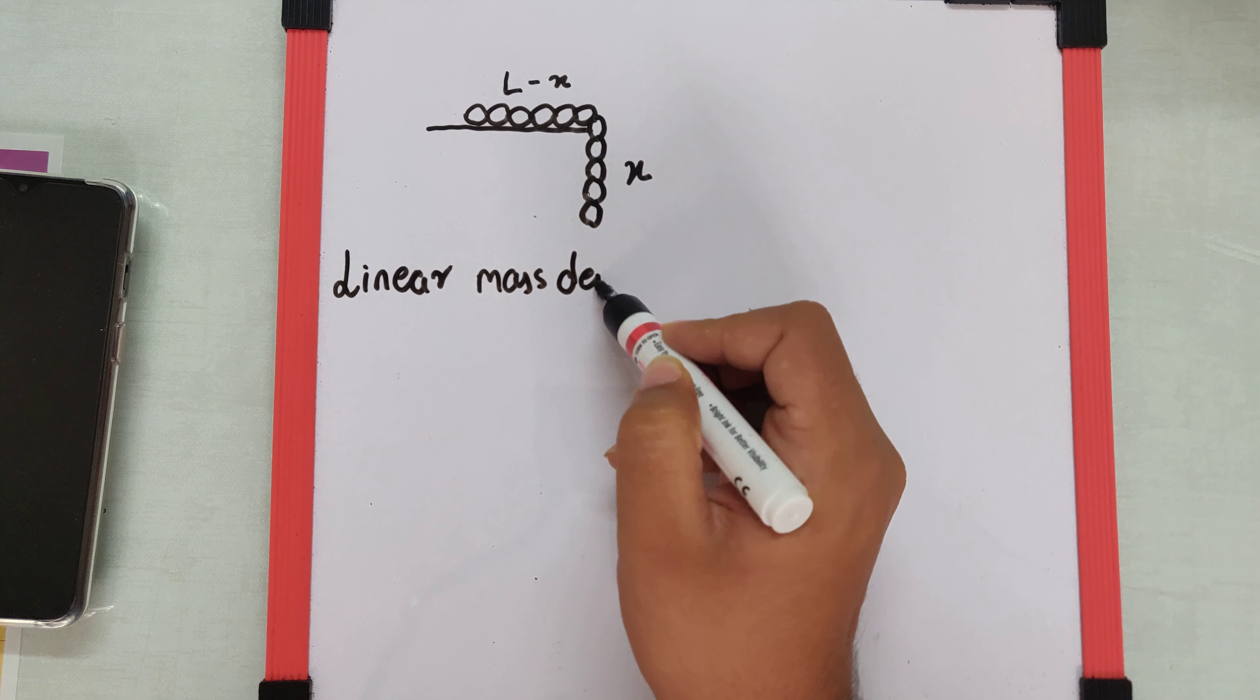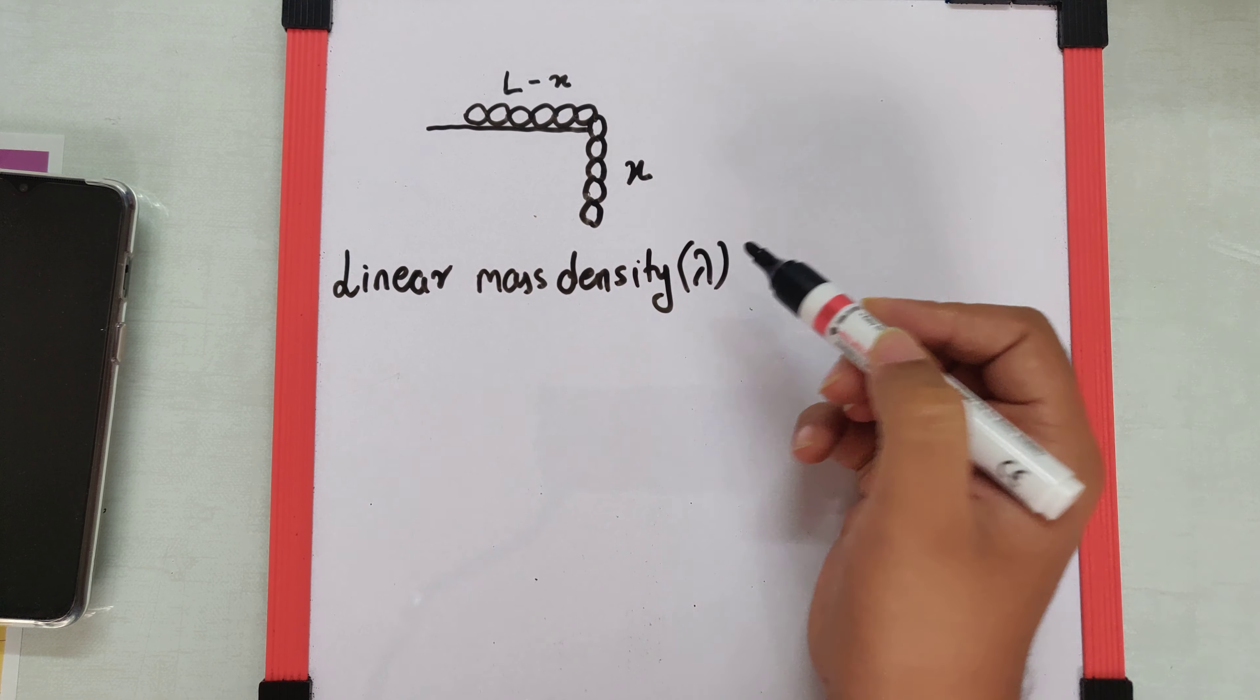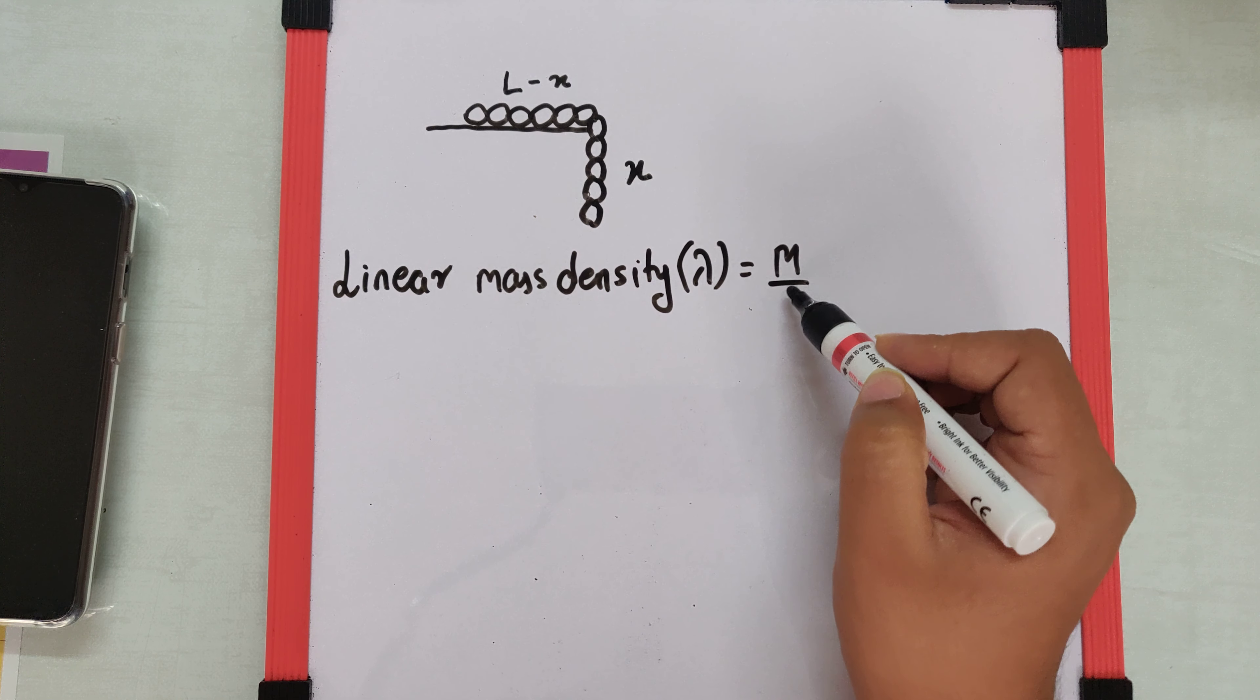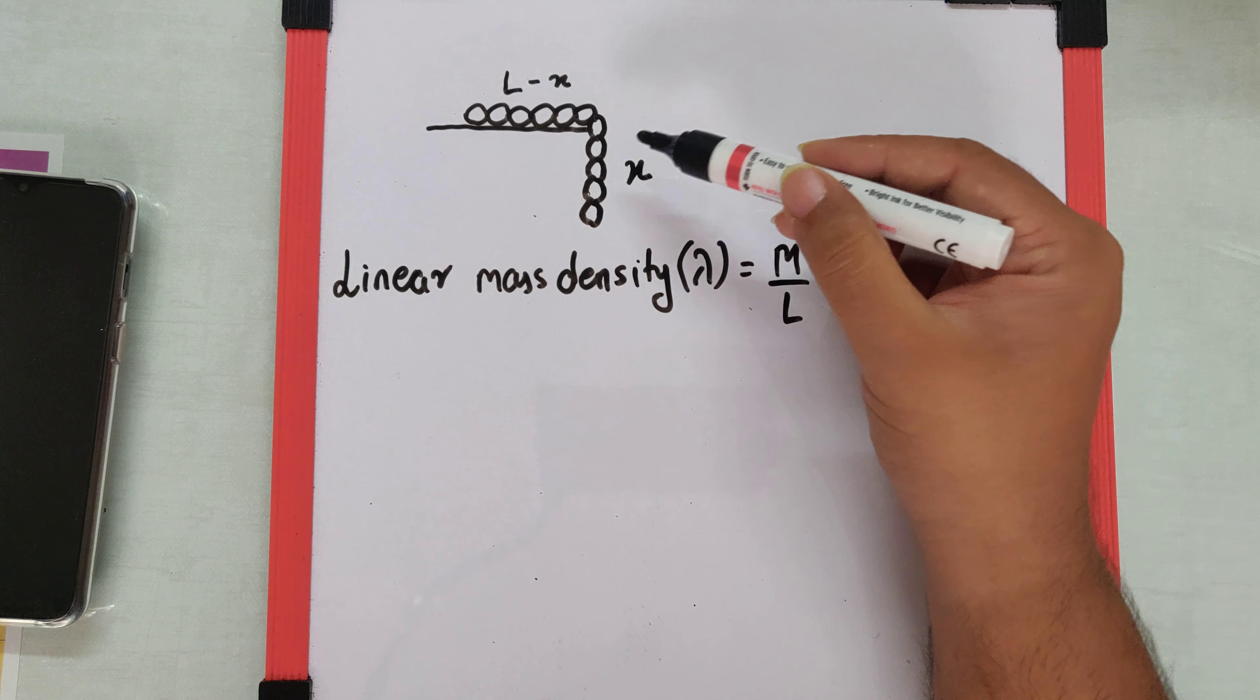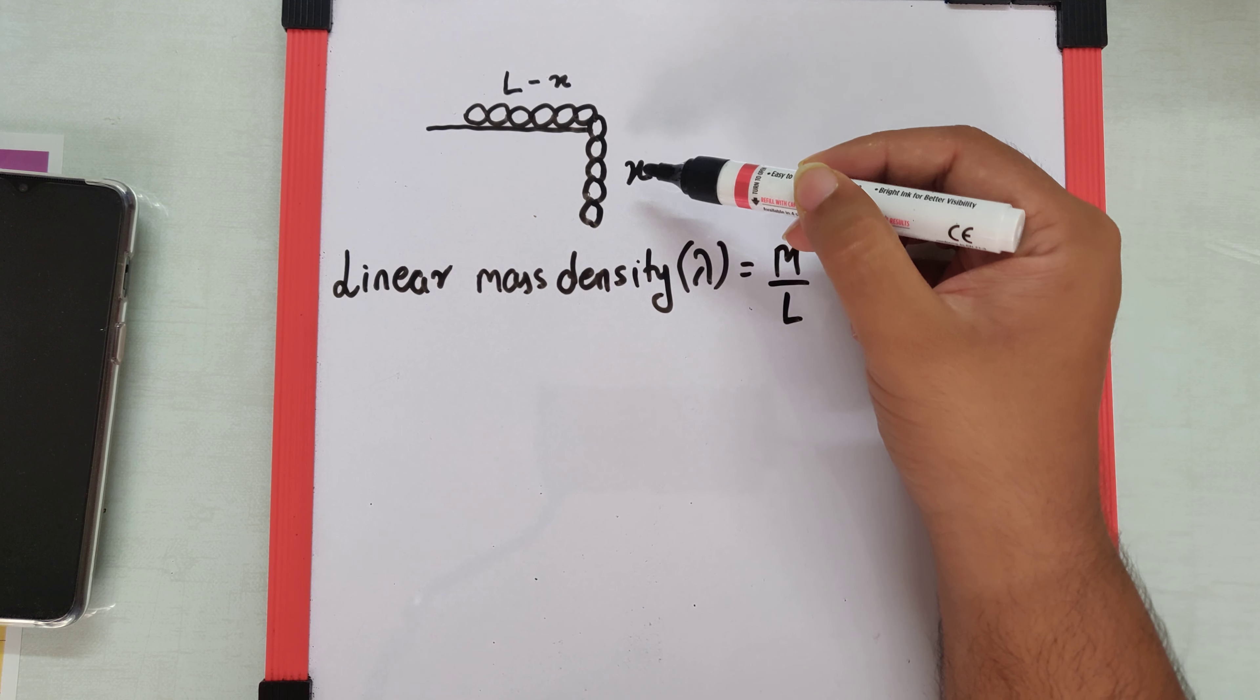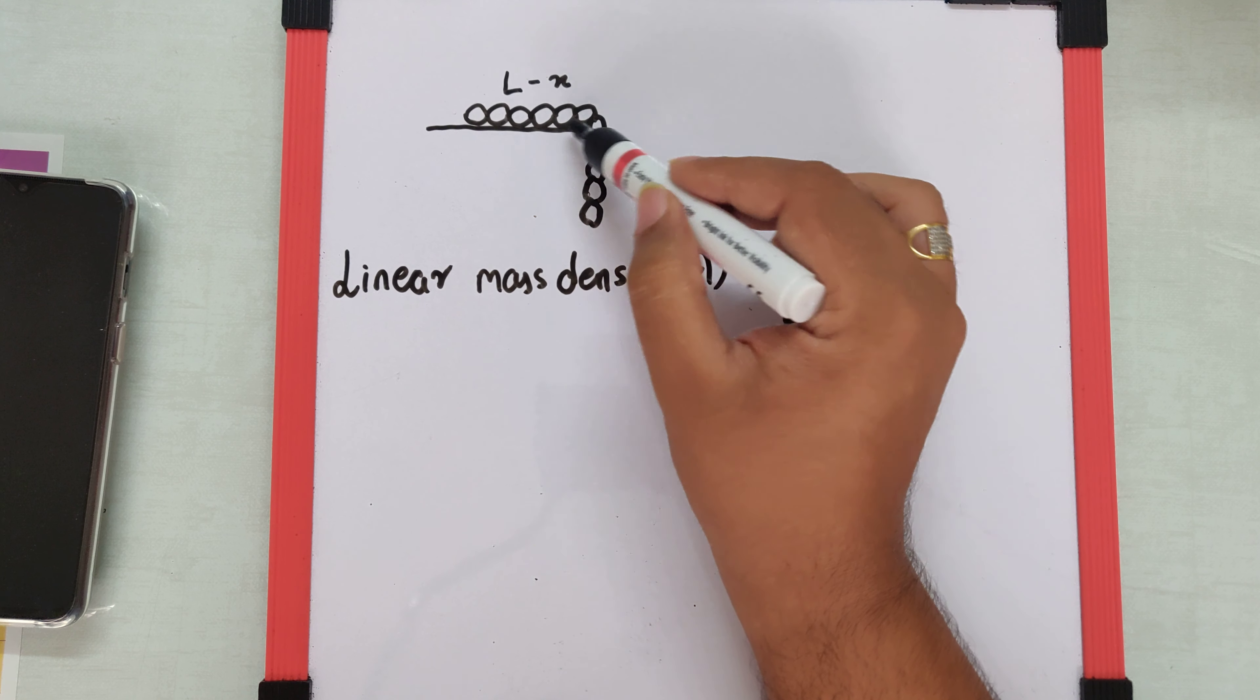Now there is a term called linear mass density. We can denote it by λ and that's M by L, mass per unit length. So I can say the mass which is hanging will be x times the linear mass density.